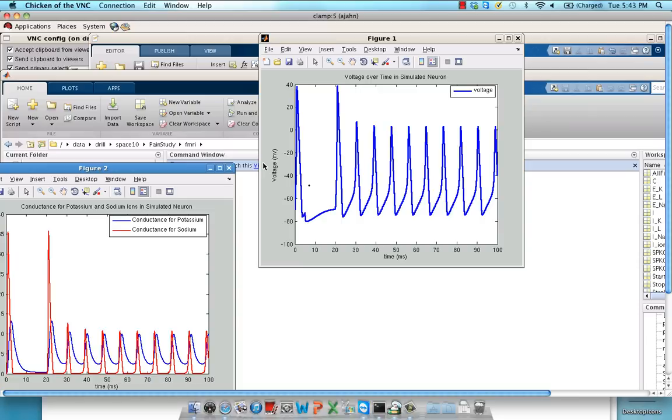For example, I applied a certain amount of current for a very small time at the beginning, which led to an action potential, and then the current was zero for a while. It was able to come back to a resting potential. Spiked again, and then it's a constant current for a long time, which results in a smaller amplitude of action potentials.